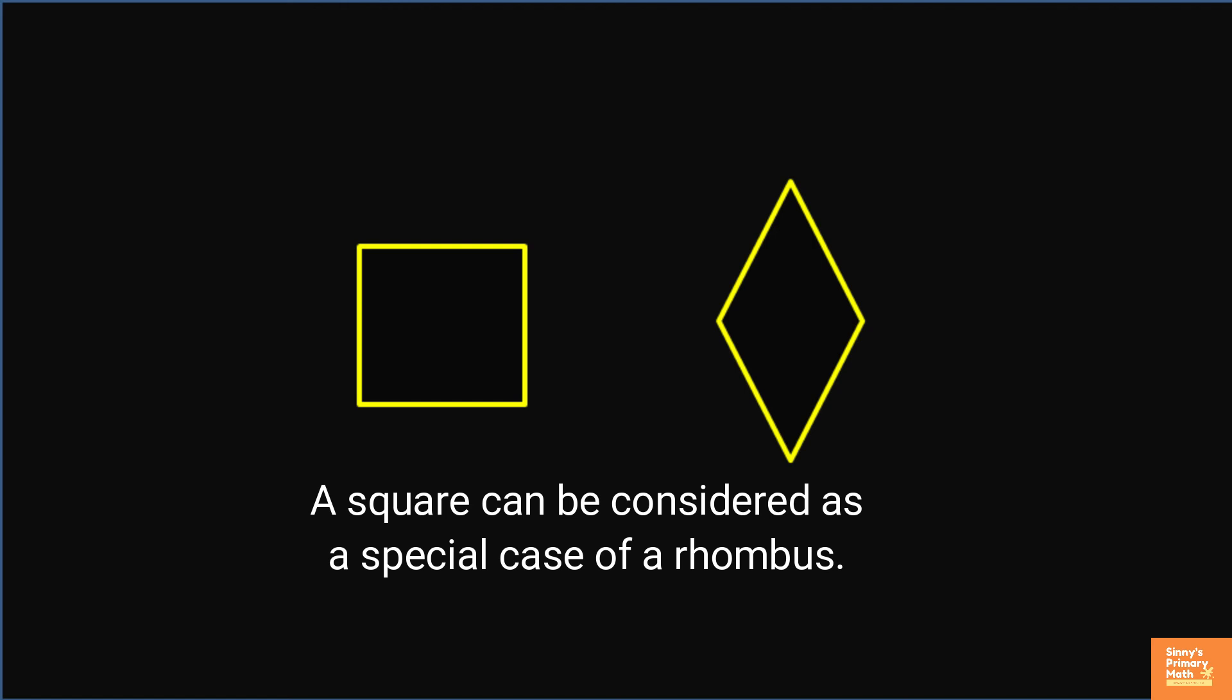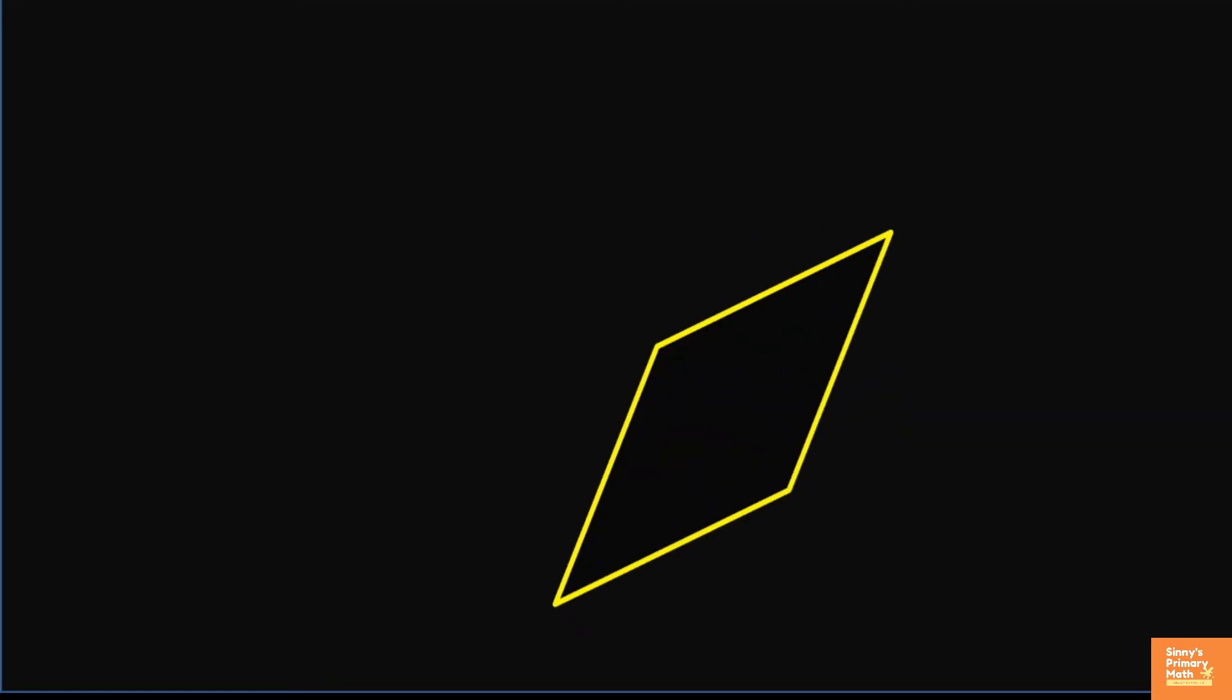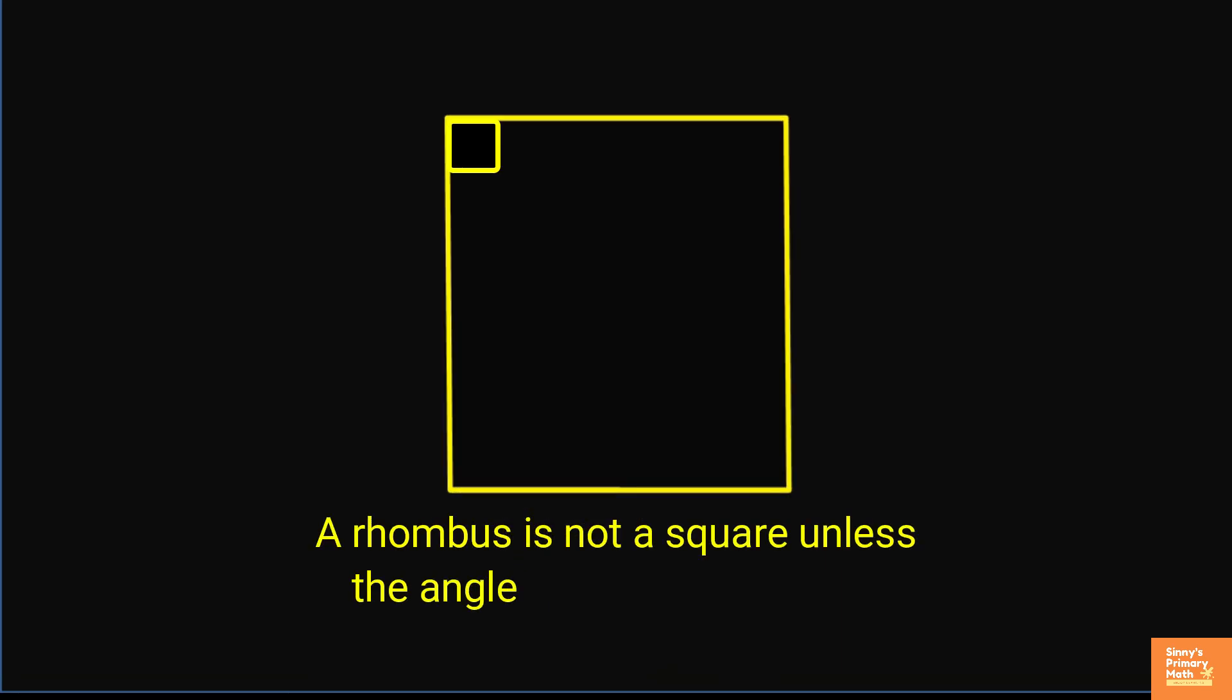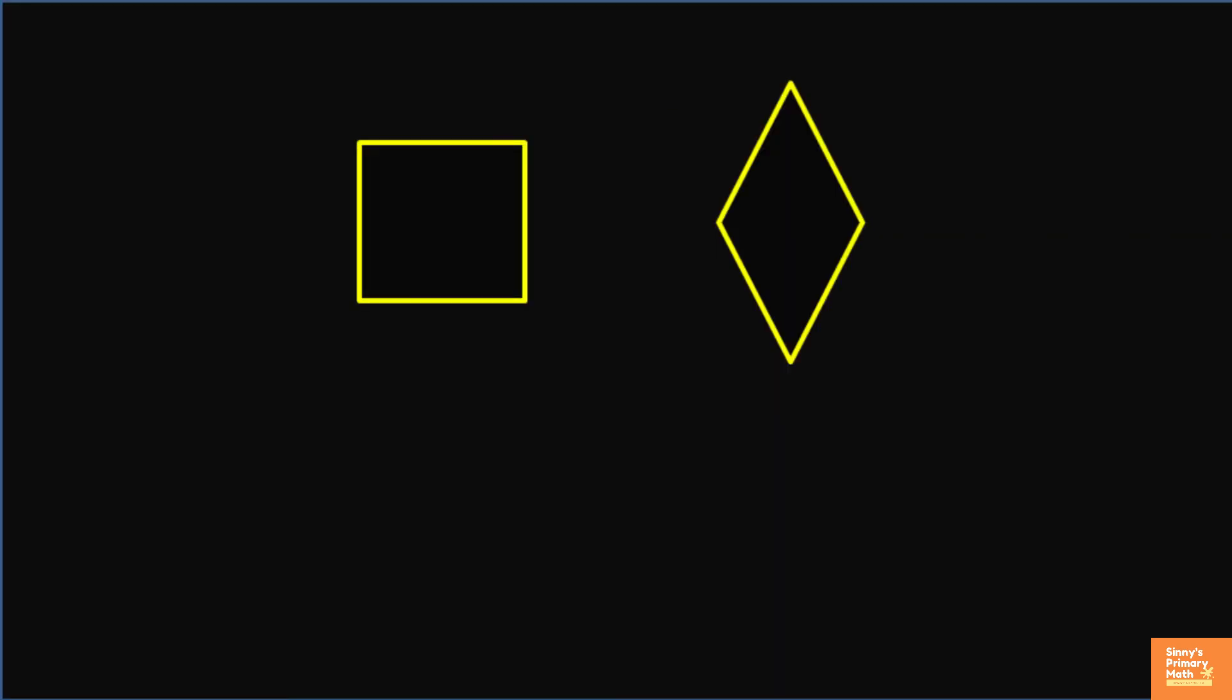All the angles of a square are right angles, but the angles of a rhombus need not necessarily have to be right angles. Hence, a rhombus is not a square unless the angles are all right angles. We can say, every square is rhombus, but all rhombuses are not square.